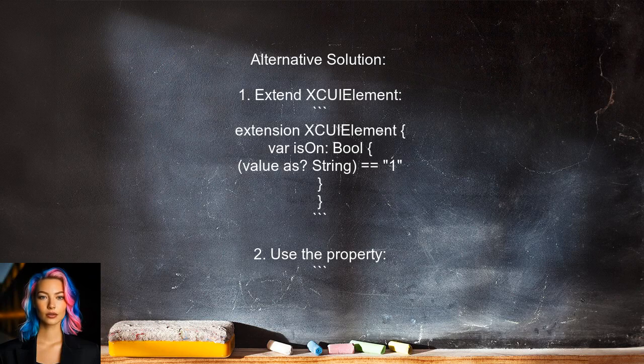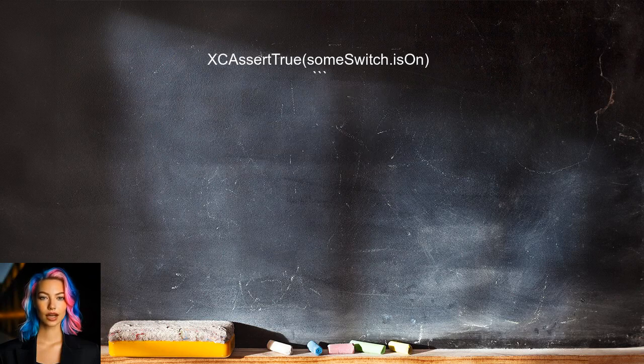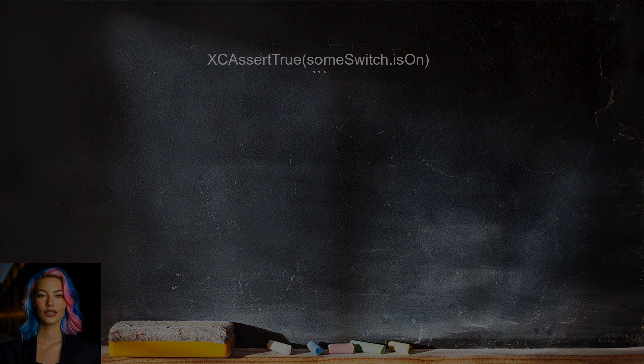They suggest defining a computed property called IsOn, which checks if the value of the UISwitch is equal to 1. This allows you to determine if the switch is on.